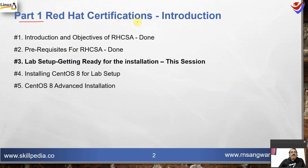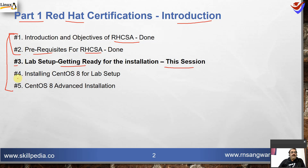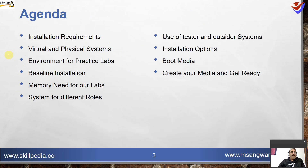This is section one, where we are talking about RHCSA certification introduction. This is a five-lecture series. We have already covered the introduction, objectives, and prerequisites of RHCSA. Session three covers lab setup — getting ready for the installation — and in the next session we will do CentOS 8 installation. The agenda for this session includes installation requirements, virtual and physical systems, and environment for the practice labs.